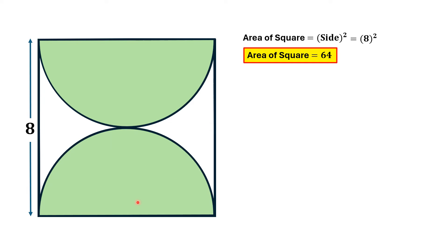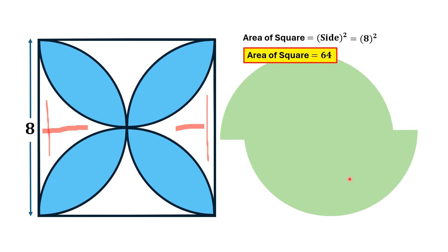This portion is a semicircle having diameter eight units, and similarly this other portion is also a semicircle having diameter eight units. If we find the area of these two semicircles shaded green and subtract from the area of the square, we will find the area of the two unshaded portions. If we combine these two semicircles, they form a complete circle.